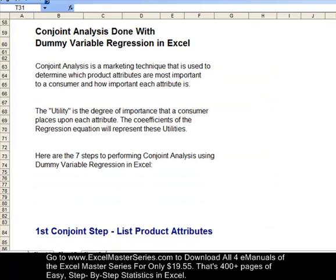Now, let's take a look at conjoint analysis. Conjoint analysis is a marketing technique that's used to determine which product attributes are most important to a consumer and how important each attribute is. A utility shows the degree of importance that a consumer attaches to each attribute, and the coefficients of the regression equation are these utilities. There are seven steps to performing conjoint analysis using dummy variable regression in Excel.